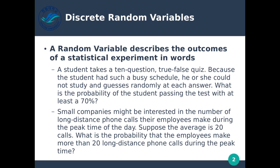Small companies might be interested in the number of long-distance phone calls their employees make during peak time of the day. Suppose the average is 20 calls — what is the probability that the employees make more than 20 long-distance phone calls during the peak time? Again, we are using words to describe the probability. Discrete random variables are normally talked about in words rather than numbers.